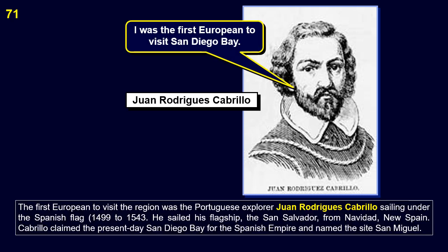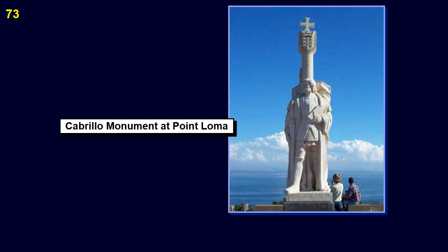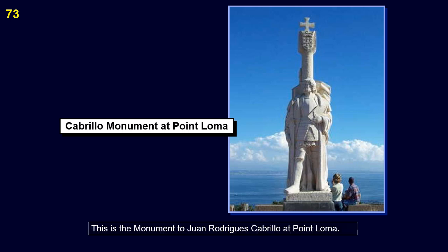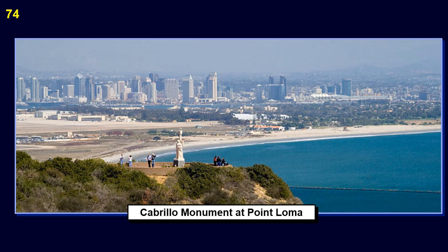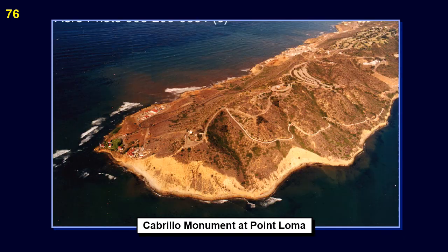The first European to visit the region was the Portuguese explorer Juan Rodriguez Cabrillo, sailing under the Spanish flag, 1499–1543. He sailed his flagship, the San Salvador, from Navidad in New Spain. Cabrillo claimed the present-day San Diego Bay for the Spanish Empire and named the site San Miguel. This is San Diego Bay and Point Loma. This is the monument to Juan Rodriguez Cabrillo at Point Loma.